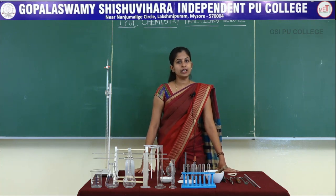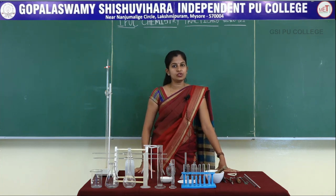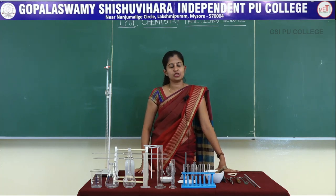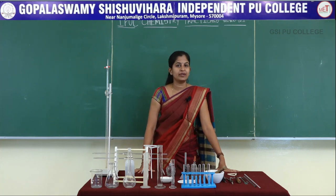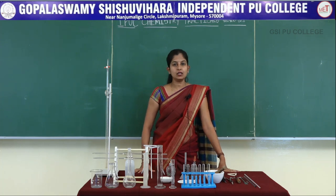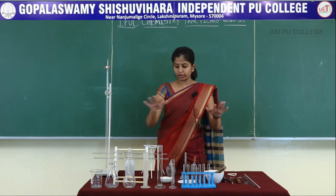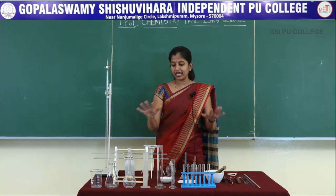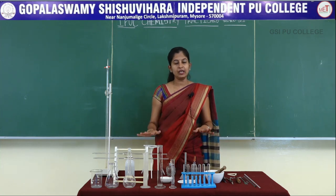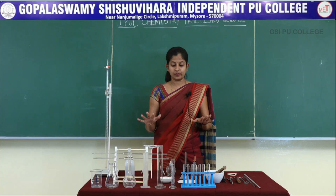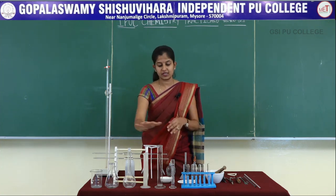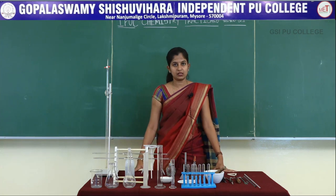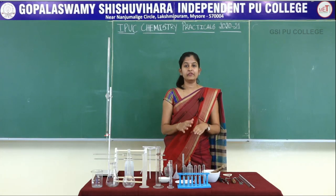Now let us get introduced to some of the important apparatus that will be daily used in your laboratory. Most of the apparatus we use is either made up of polythene, glass, or very rarely metal. The majority of apparatus used in your chemistry laboratory will be made up of borosyl glass, followed by polythene and very rarely metals. We will be introducing all the apparatus one by one, each with their technical name and usage. The first line of apparatus you are seeing here are all measuring apparatus.